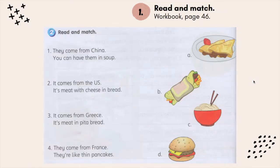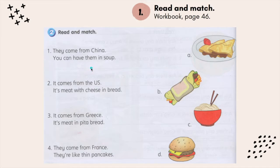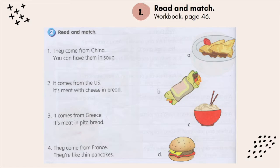Now let's look at the next activity on workbook page 46: read and match. Number 1: they come from China, you can have them in soup — draw a line to the correct picture. Number 2: it comes from the US, it's meat with cheese in bread. Number 3: it comes from Greece, it's meat in pita bread. Number 4: they come from France, they're like thin pancakes. I think you can figure out the suitable picture.